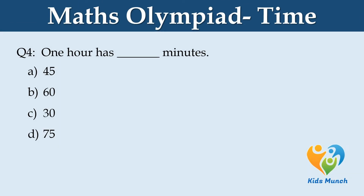One hour has dash minutes. Option A: 45. Option B: 60. Option C: 30. Option D: 75.